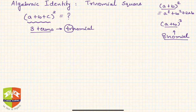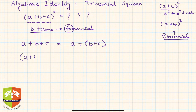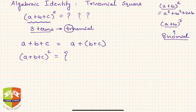Now, what will be the expression for this identity? Let us try to use our previous knowledge of algebraic identities using binomials to find this out. If you see, (a + b + c) can be written as (a + b) + c within brackets. So (a + b + c)² can be written as [(a + b) + c]².